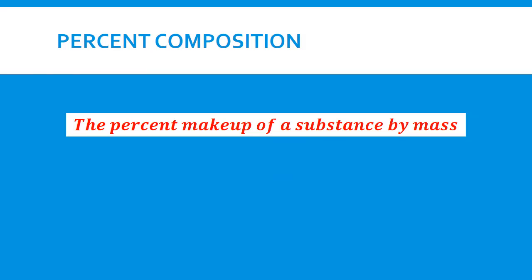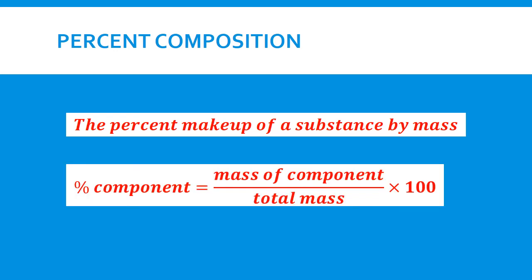Now let's look at percent composition — that is the percent makeup of a substance by mass. We look at the percent composition of each component in that substance. We take the mass of the component divided by the total mass times 100. It's still a percent, so it's still out of 100 — hence we multiply by 100. It's part over the whole: the mass of each component divided by the total mass of the substance, times 100.